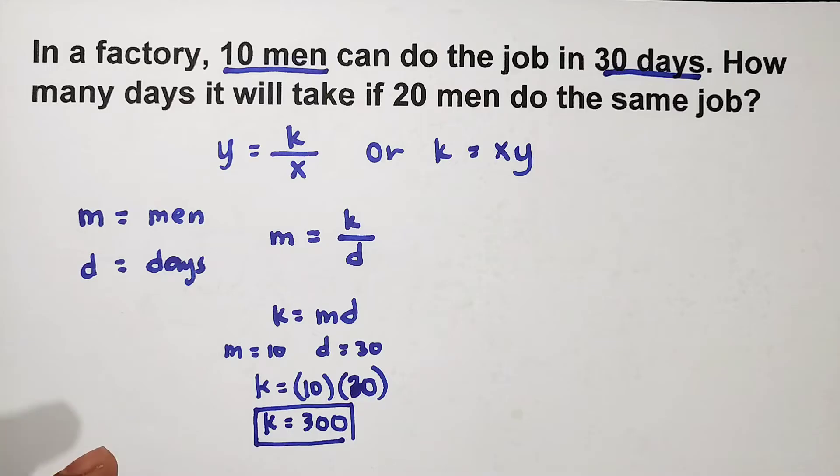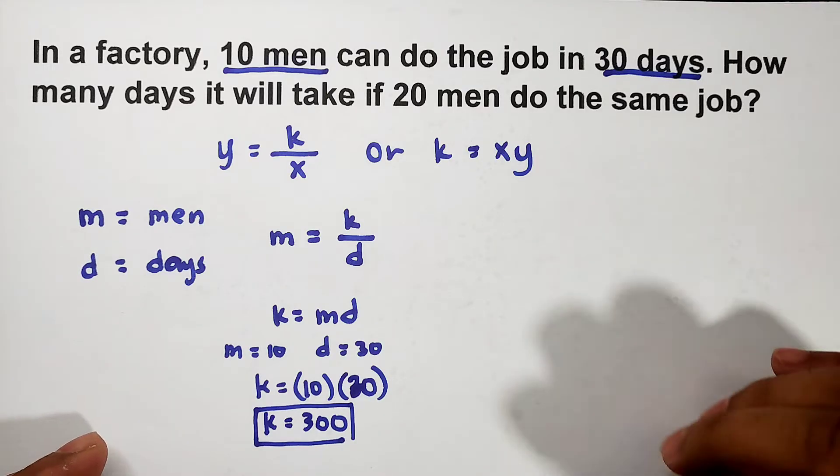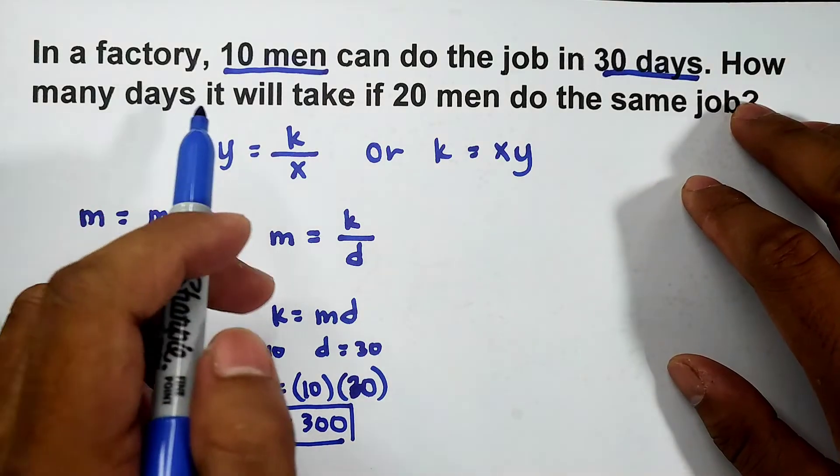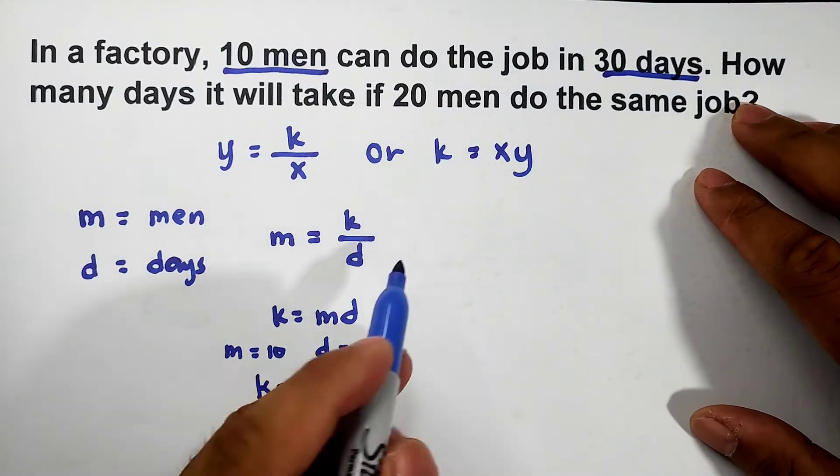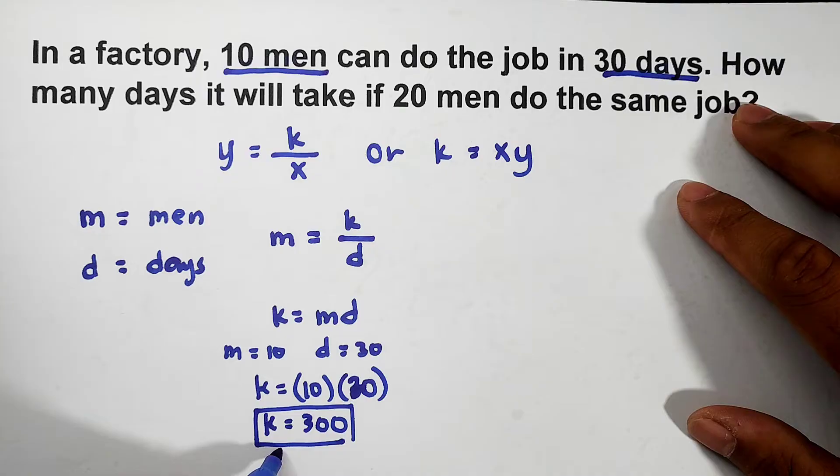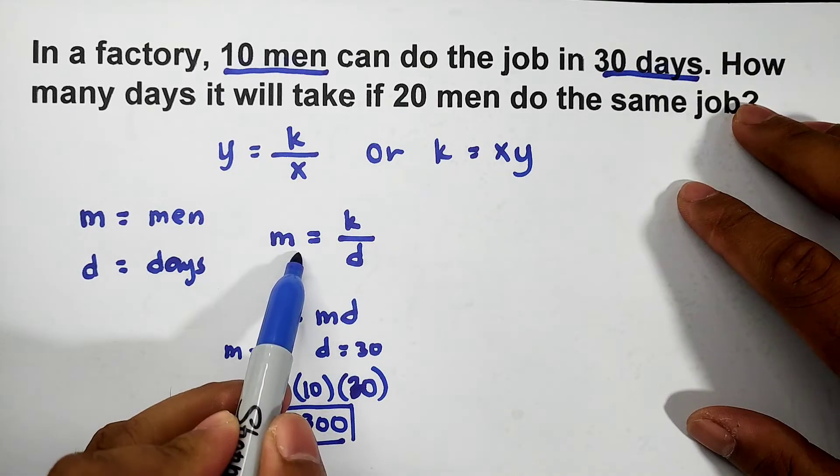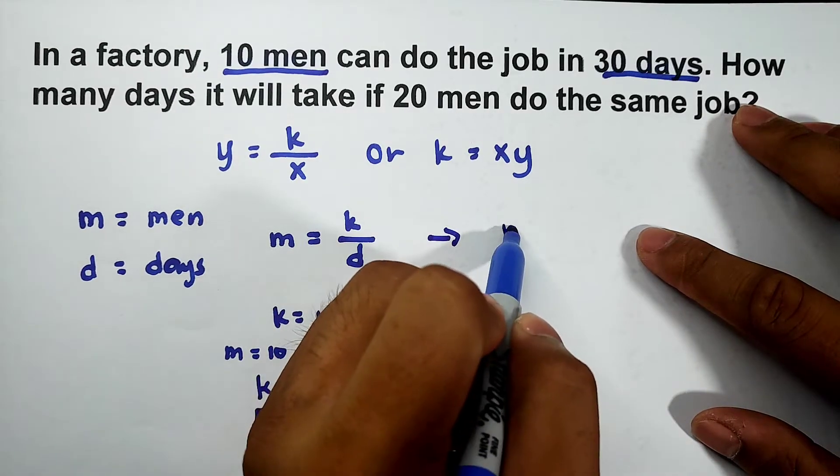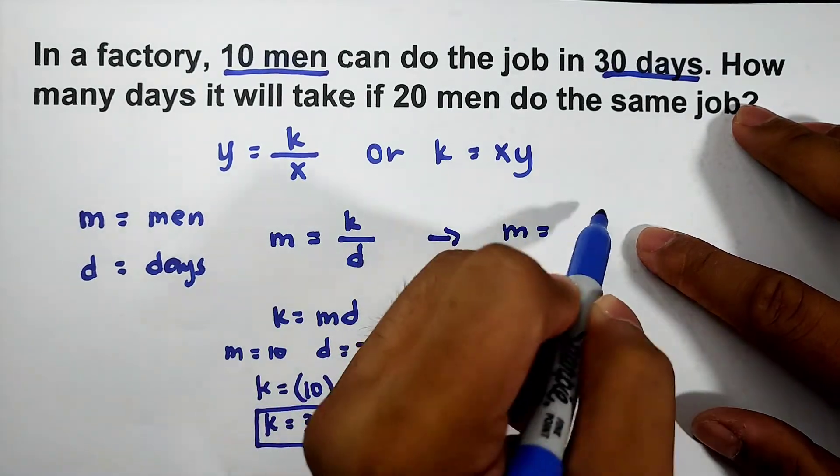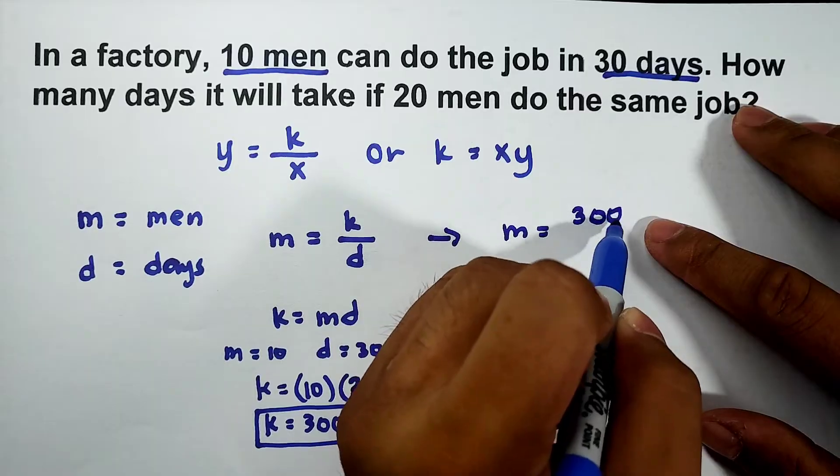Ngayon naman, puntahan natin yung mismong problem. How many days will it take if 20 men can do the same job? So gagawin mo rito ngayon, since meron ka ng value ng k, go back here and gawin mo siyang mismong formula or equation. m = k, which is 300. m = 300/d.